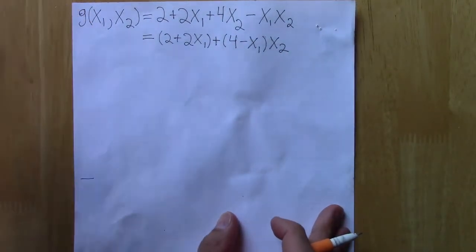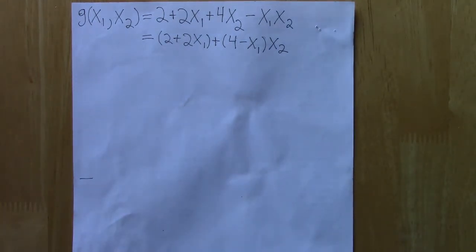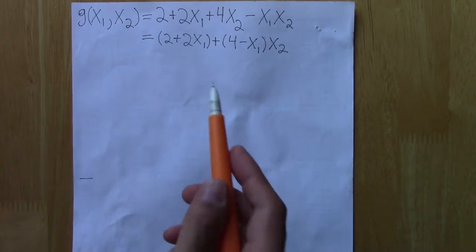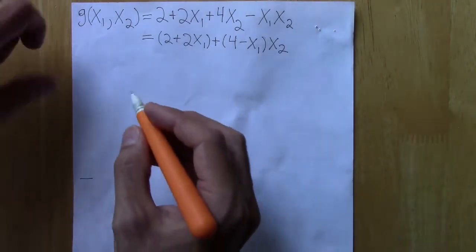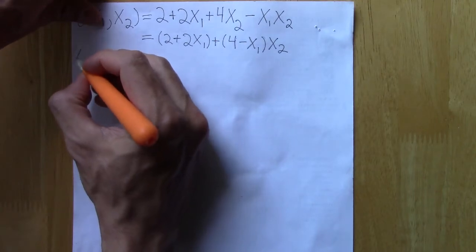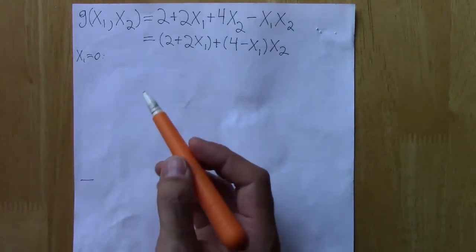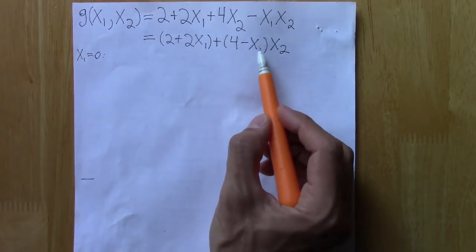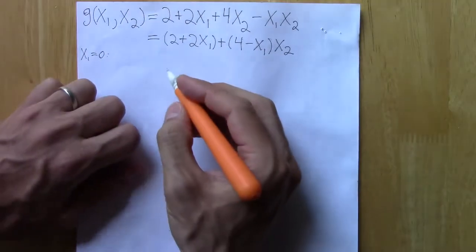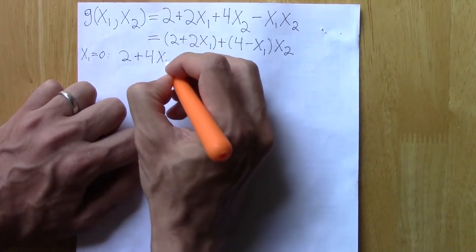Now to get some idea of what this looks like, we could just plug in different values of x₁. In practice, you'll want to think about what x₁ and x₂ are economically to think about reasonable, realistic values of x₁ to plug in. So here we can imagine, just to start simple, if we plug in x₁ equal to zero, this part zeroes out. So we'll just get 2 for the intercept, this part zeroes out, and we get 4 for the slope. We get 2 plus 4x₂.